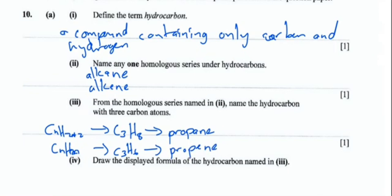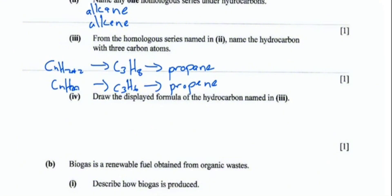The next question says draw the displayed formula of the hydrocarbon named. If it is propane, you first draw your open chain of three carbon atoms, then you add the hydrogens and make sure that the bonds are enough. Each carbon should have four bonds because there are no double bonds in propane. So if it's propane we have eight hydrogens. This is your propane.